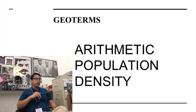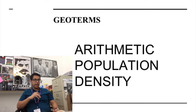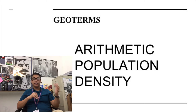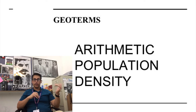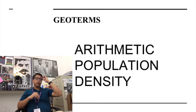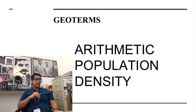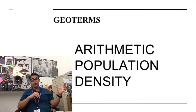You also want to know the term arithmetic population density, and that's a term that simply means the total amount of population divided by the total land area in a country. So a place like Japan would have a high arithmetic population density, and that is because there is a lot of people crammed into a small space.